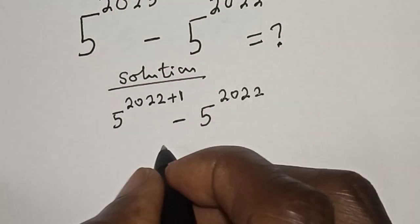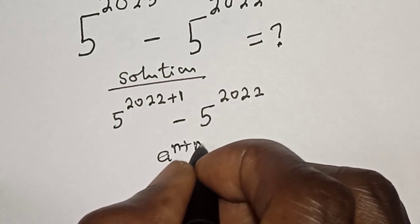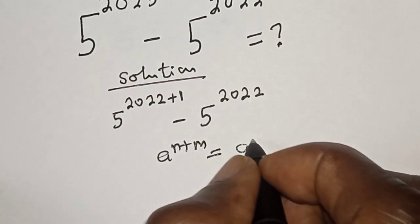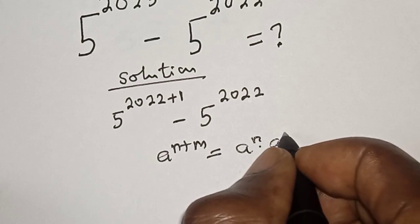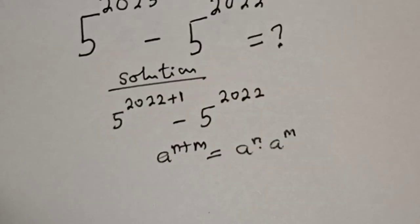Take note of this rule: if you have a raised to power n plus m, this equals a raised to power n multiplied by a raised to power m.